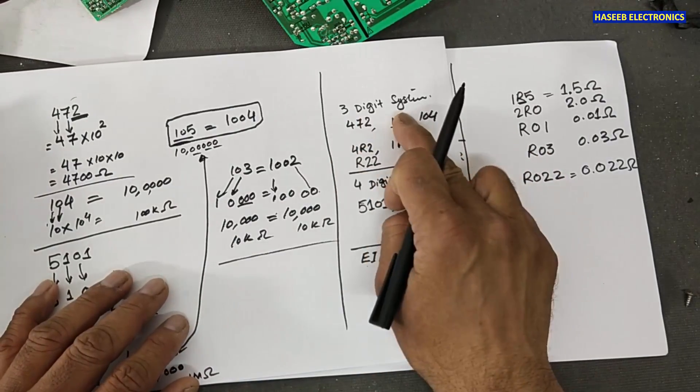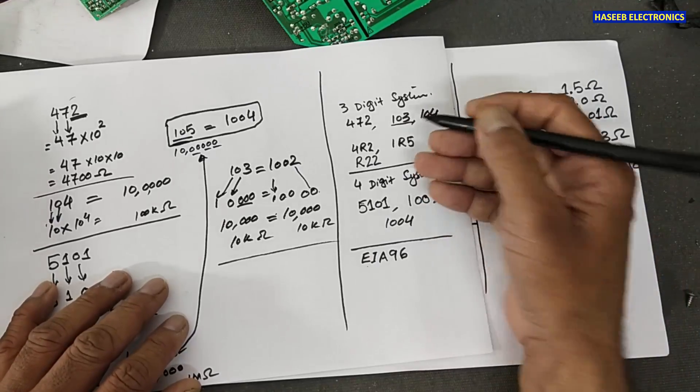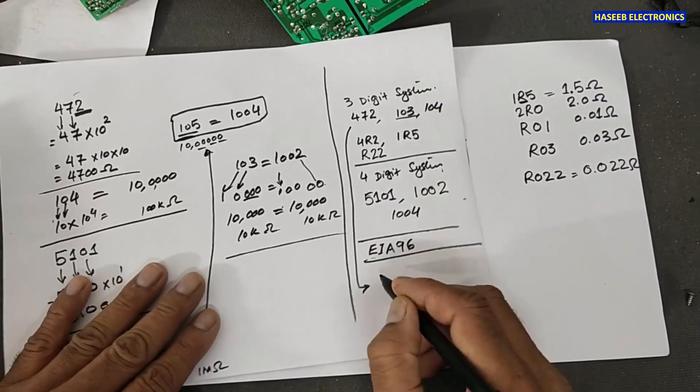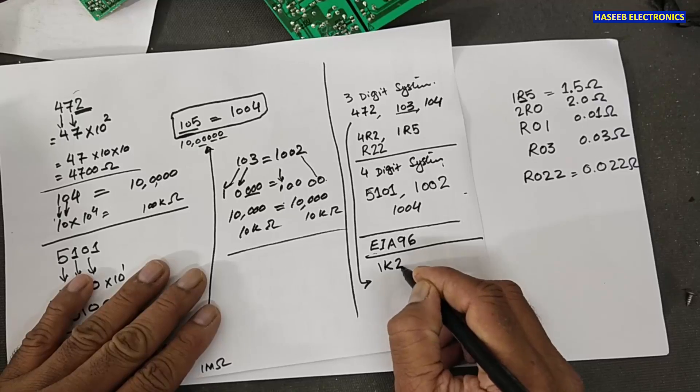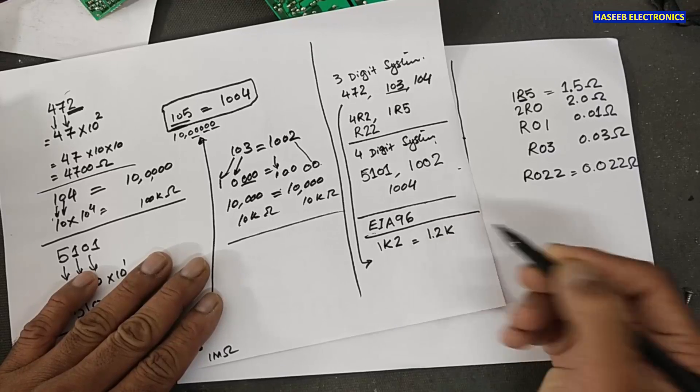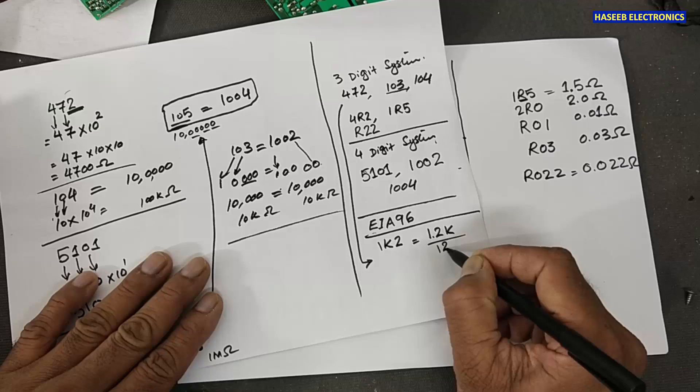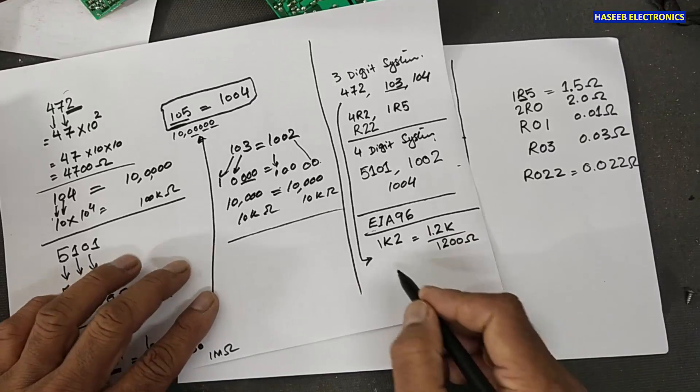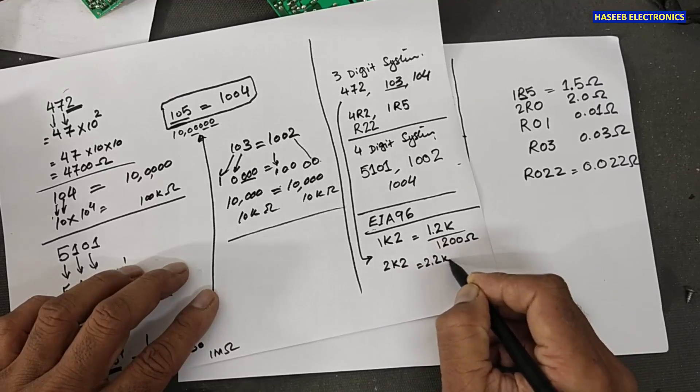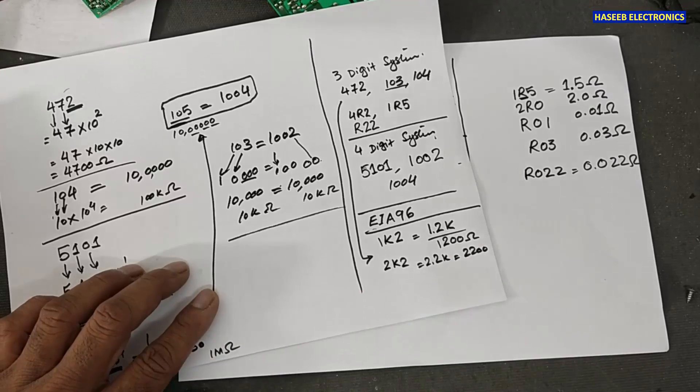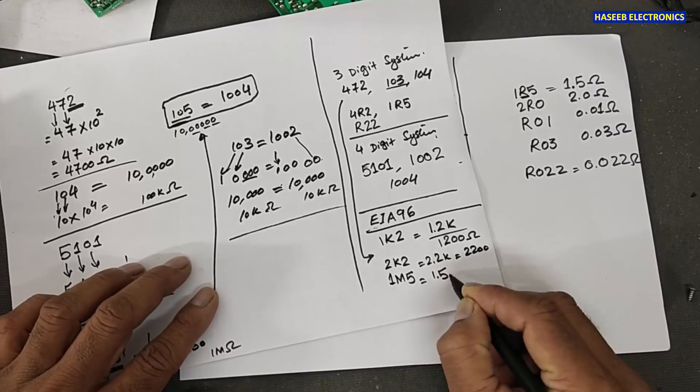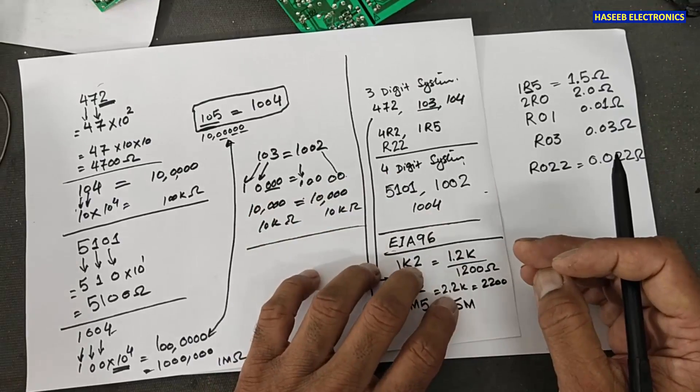Then in the same three-digit system, we see some numbers. I will bring this number here. 1K2. That means it is 1.2K. Or we can say it is 1,200 ohms. 2K2. 2.2K. Or 2200 ohms. 1M5. 1.5 mega. These marking numbers will give the resistor value.